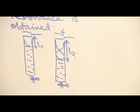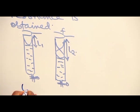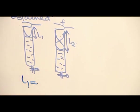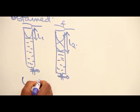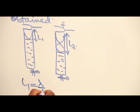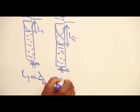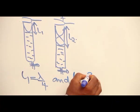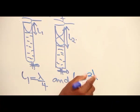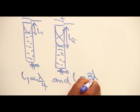We know that the length of air column L1 is equal to wavelength over 4. And the length of air column L2 is 3 wavelengths over 4.